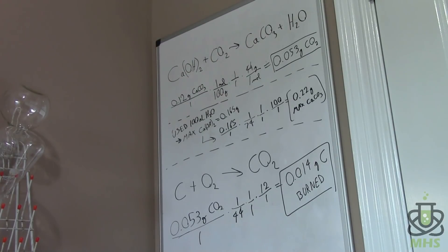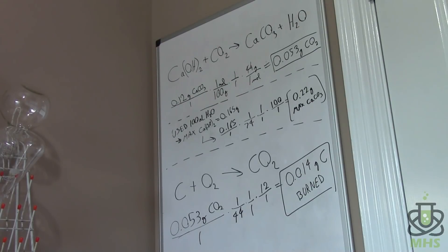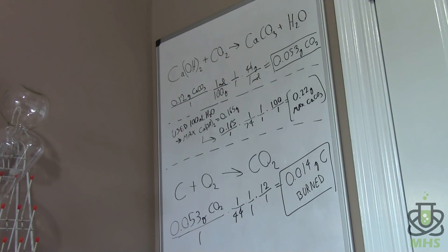And also what I just discovered is that apparently excess carbon dioxide causes the chalk that's produced to dissolve again as calcium bicarbonate. So as this reaction progresses, some of the calcium carbonate actually gets re-dissolved. So it turns out that measuring the mass of the chalk that was produced is not really a great way of doing this either.